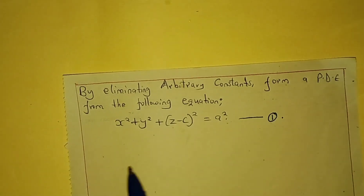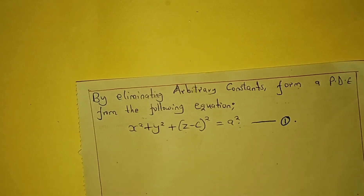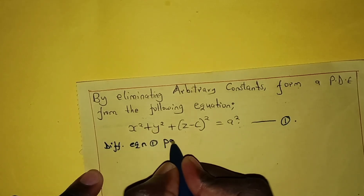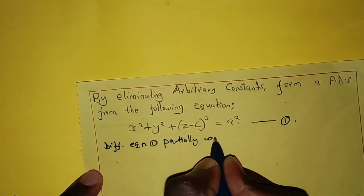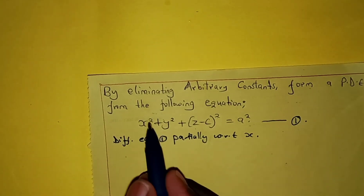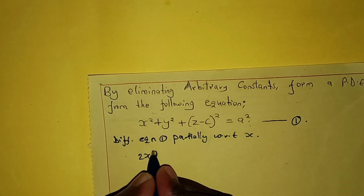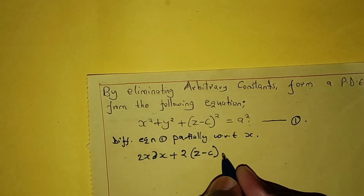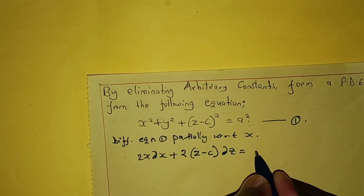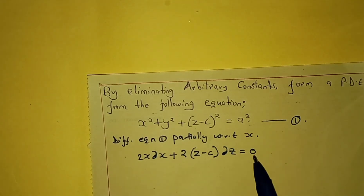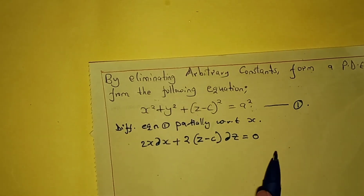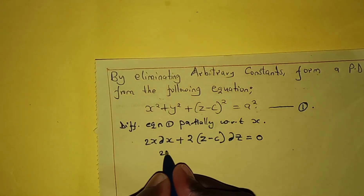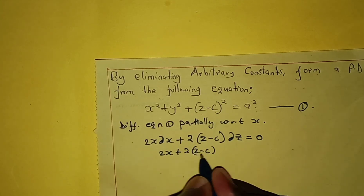First step, we differentiate equation one partially with respect to x. Differentiating, we get 2x partial x plus 2 into (z minus c) partial z equals zero. Of course, when we differentiate a constant we get zero. So we divide every factor by partial of x and we get 2x plus 2(z minus c) into brackets.